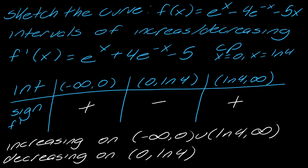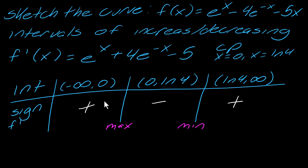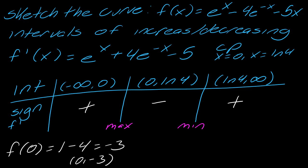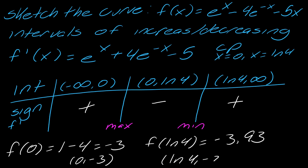From the sign analysis we can determine max and min. At x equals 0 I'm going from increasing to decreasing, so there's a local max. At x equals ln(4) I'm going from decreasing to increasing, so there's a local min. Plugging into the original function: f of 0 gives 1 minus 4 which equals negative 3, so the max point is (0, -3). And f of ln(4) comes out to approximately negative 3.93, so the min point is (ln(4), -3.93).